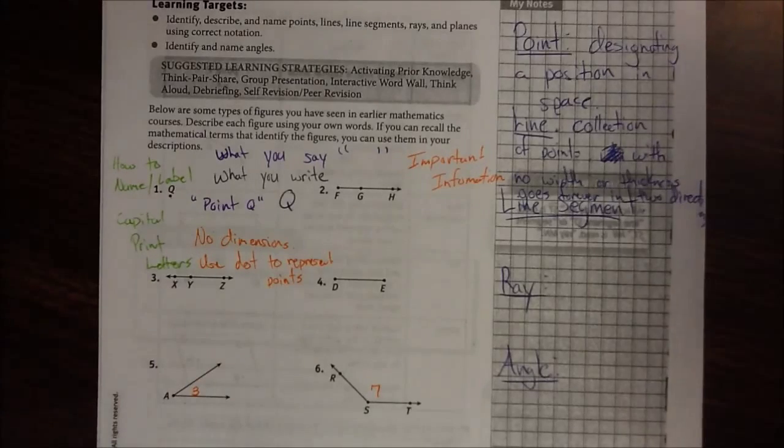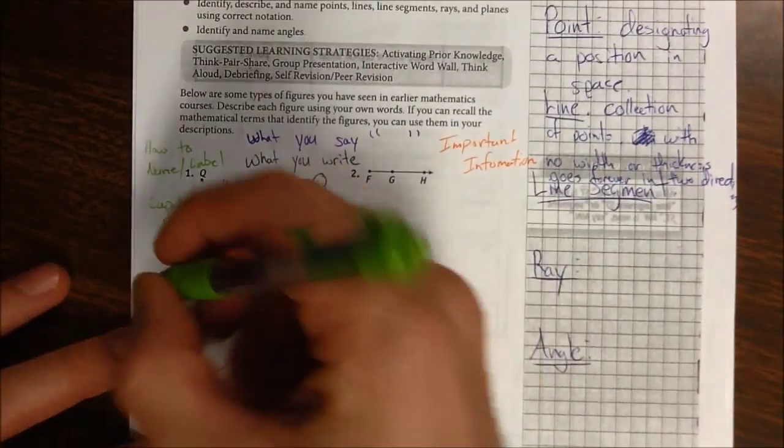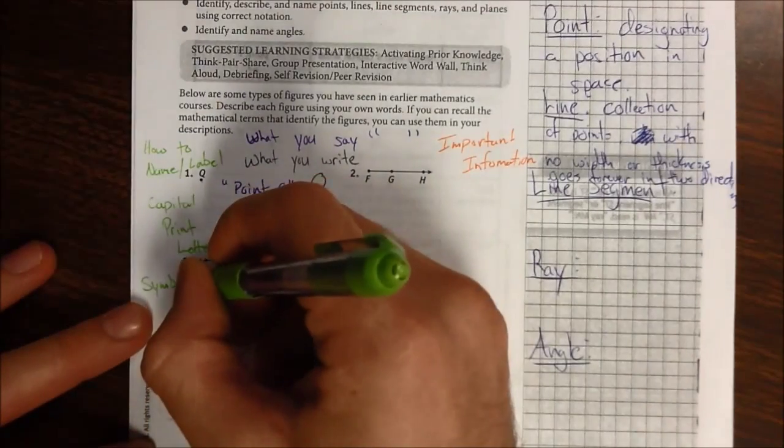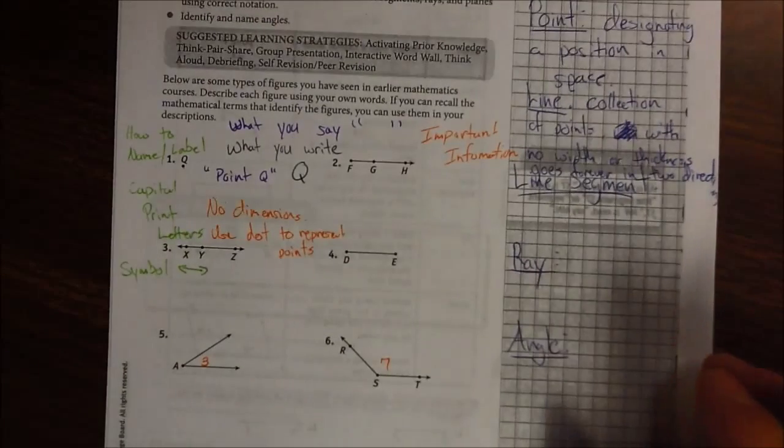So when you see an object like that, how are we going to name it, how are we going to label it? Well, the way we do that with lines is there's a symbol for it. And the symbol is a line with two arrowheads, very similar to as it looks.